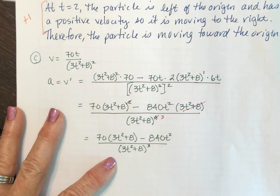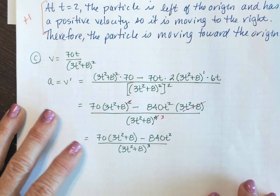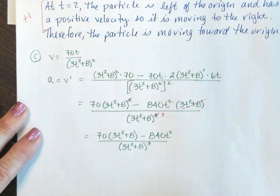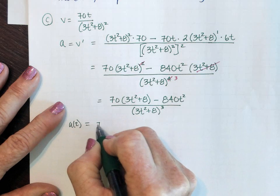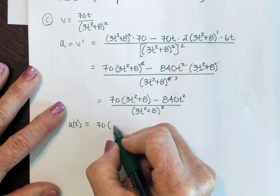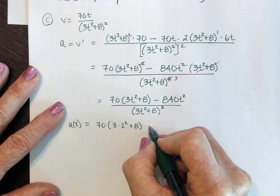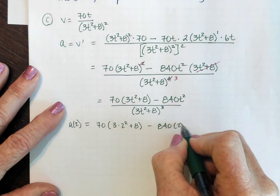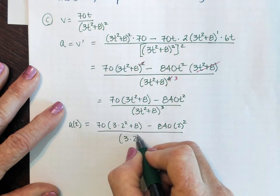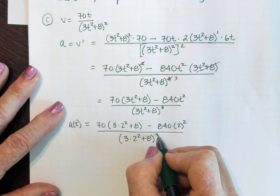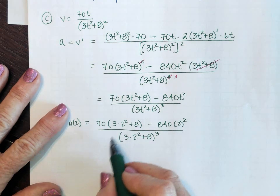We were to find the value for a of 2, so at this point we're going to go ahead and plug in the 2. a(2) = 70 times (3 × 2² + 8) minus 840 times 2² all over (3 × 2² + 8)³.